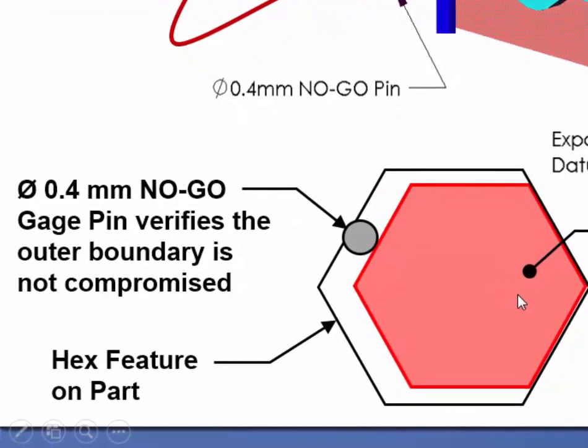By utilizing a 0.4 mm gauge pin, we can verify the feature has not violated the outer boundary. If the pin does not fit between the hex and the gauge element, we know the hex has not violated the outer boundary and the part is good.